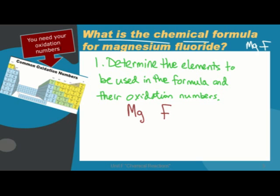So when we apply our oxidation numbers, we indicate that magnesium has a 2+, and fluorine has a 1 negative. That's it for the first step. So let's look at the second step.